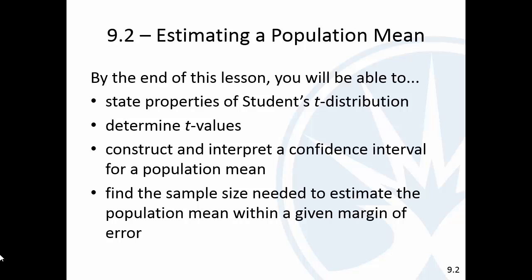Alright, so next section here we're going to talk about the population mean. We've done confidence intervals about the population proportion, and now we're going to have to introduce some new theory here. You can see on the list there we have something called a t-distribution, and then we're going to do these confidence intervals for the mean, and again, find a necessary sample size.